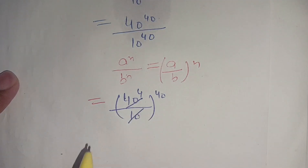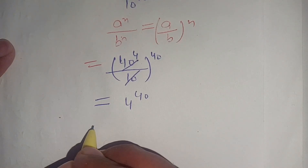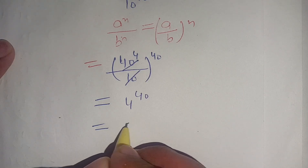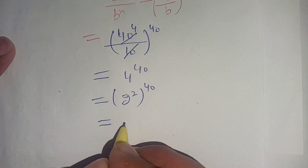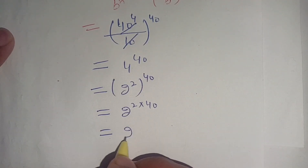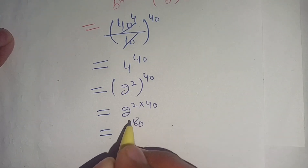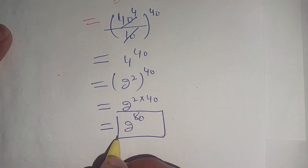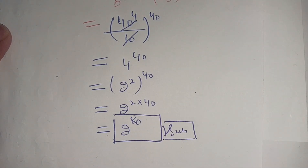We simplify: 40 divided by 10 equals 4, so we have 4 to the power 40. We can write 4 as 2 squared, giving (2 squared) to the power 40, which equals 2 to the power (2 times 40), that is 2 to the power 80. That is the required solution. Make sure to subscribe to our channel for more informative videos. See you in the next video!